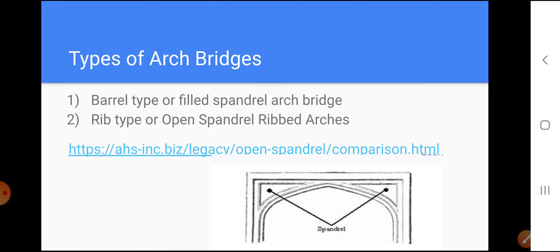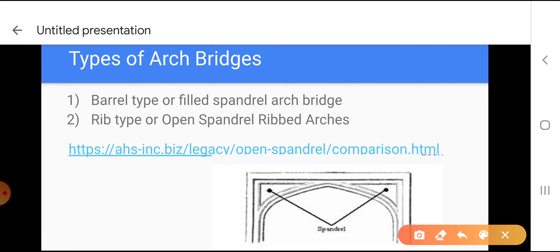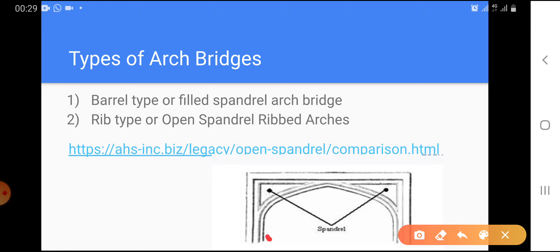One question will arise here: what is this spandril? There is an arch shown here, and this is a frame structure supported on the arch. You can see a triangular portion between the rectangular frame structure and the arch. This triangular portion is called the spandril.